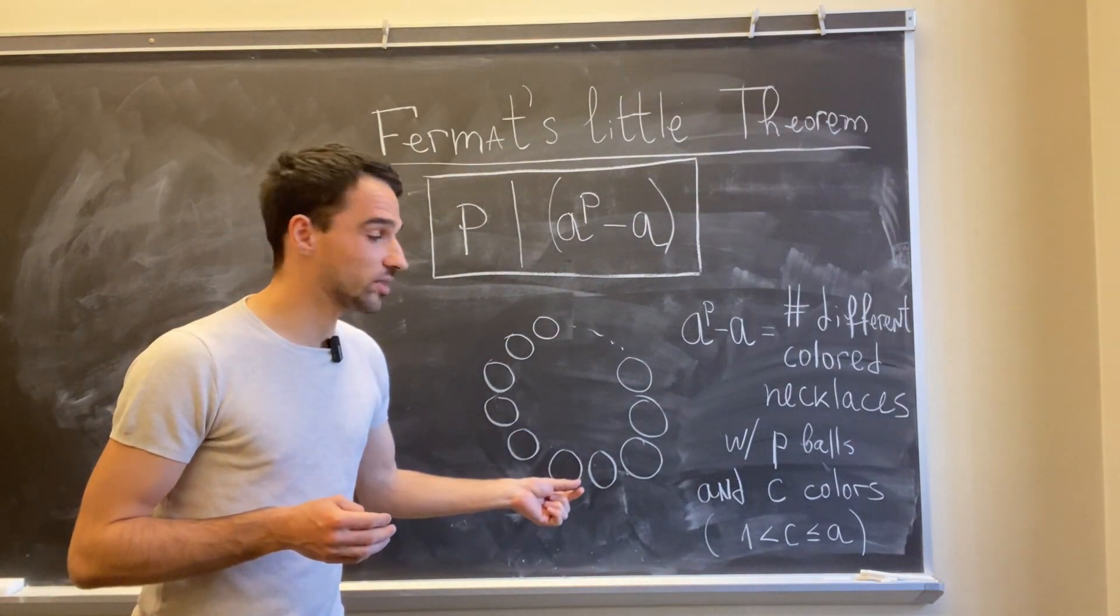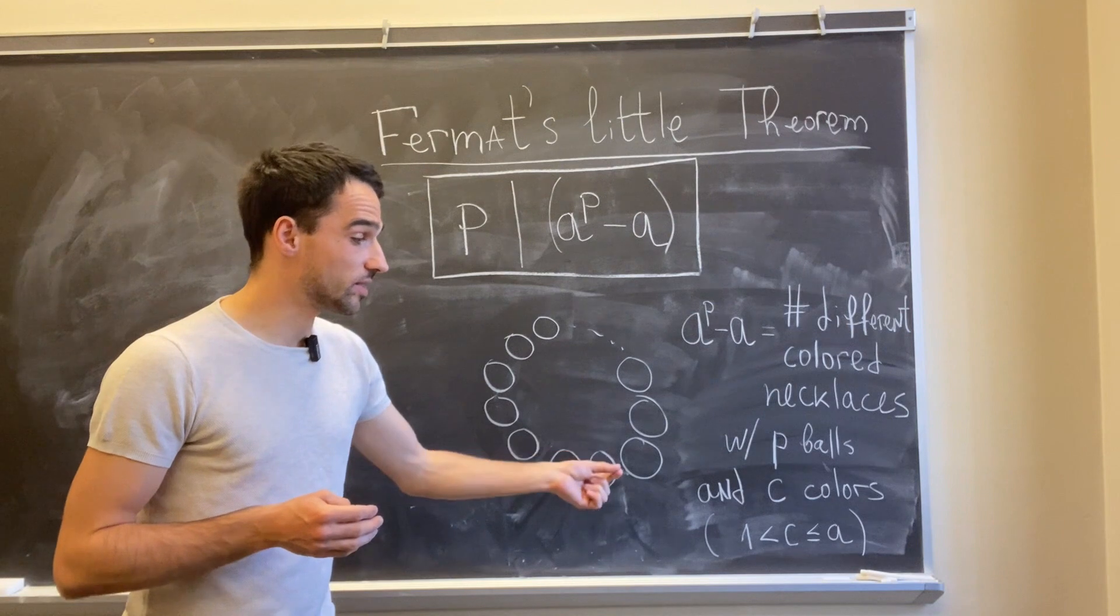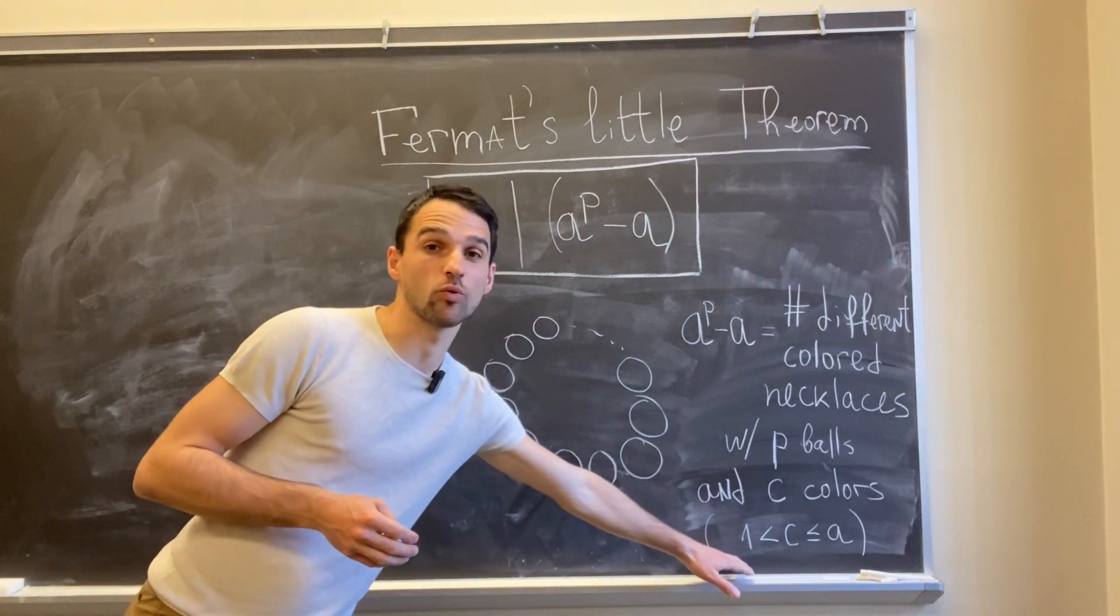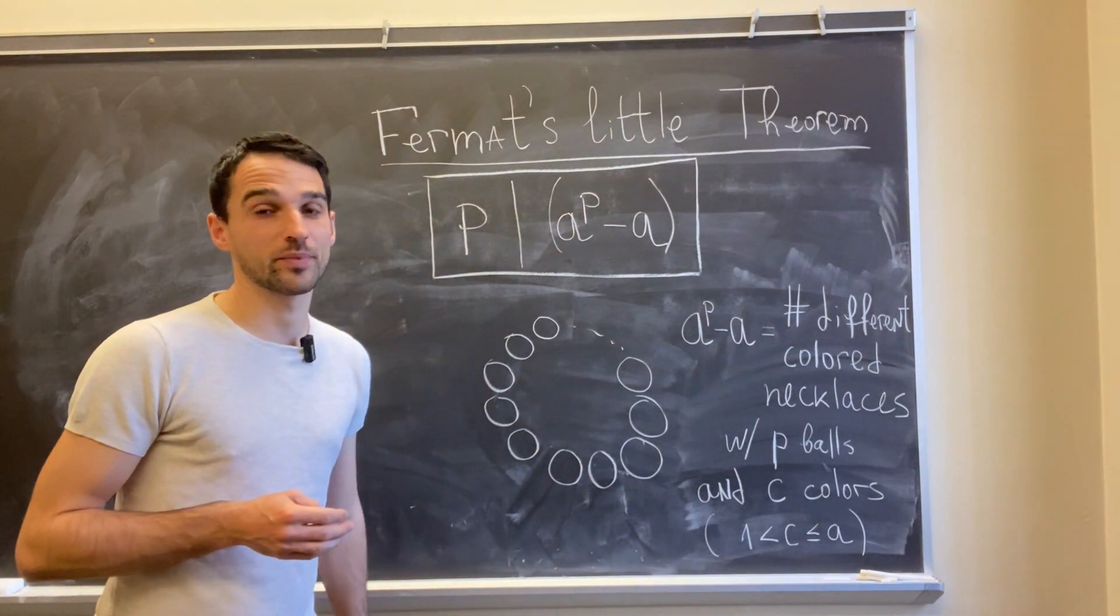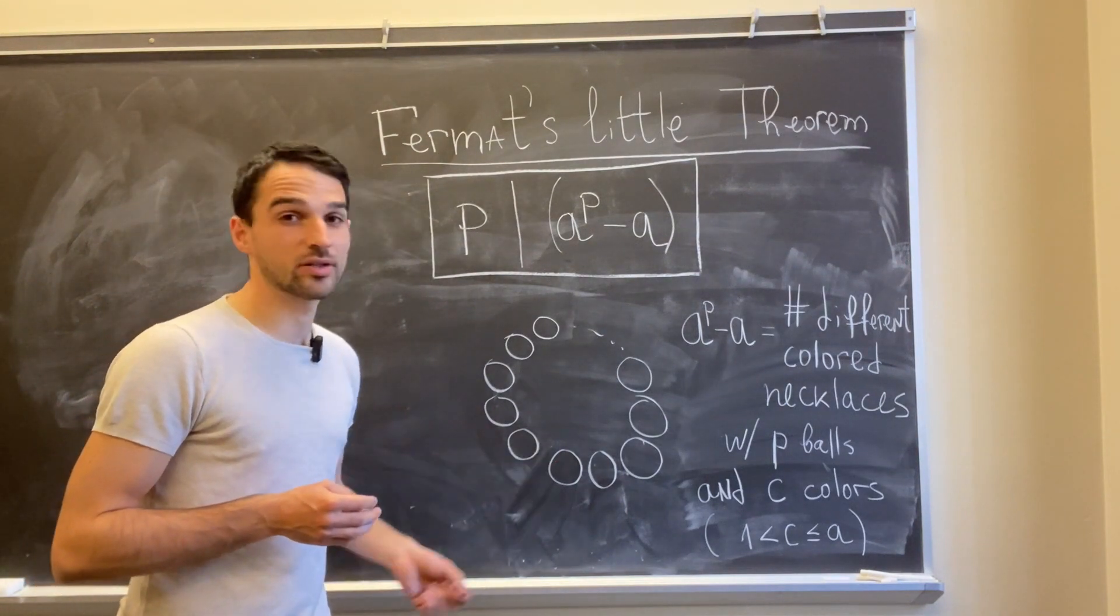Each of the p balls in them can be colored in one out of c colors, where c is more than one. So I have at least two different colors here for my necklace.